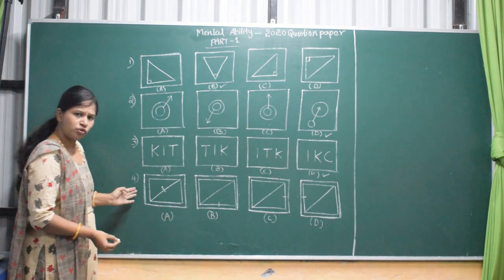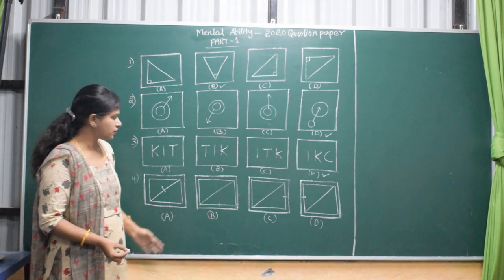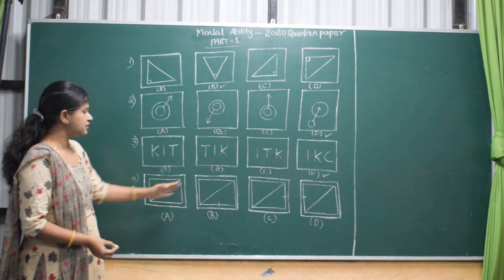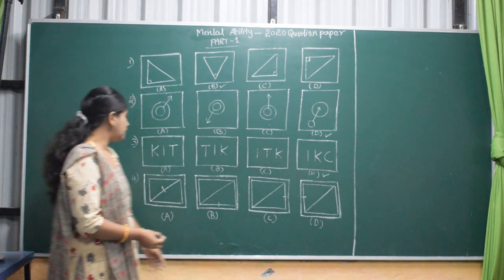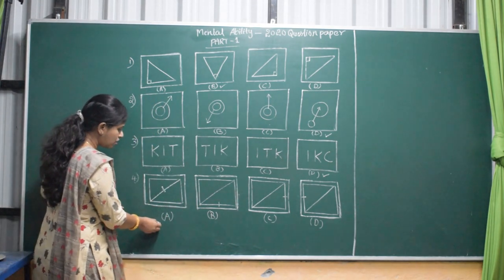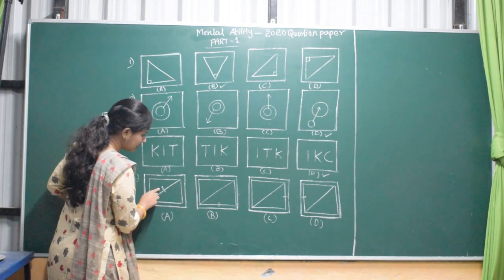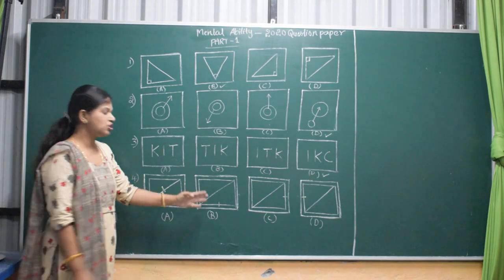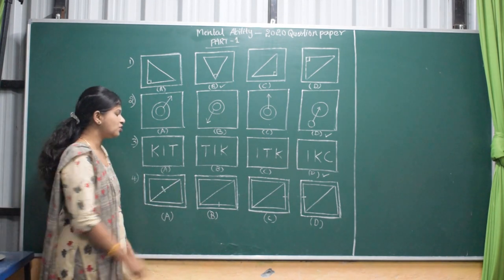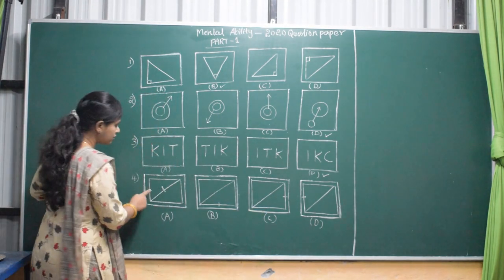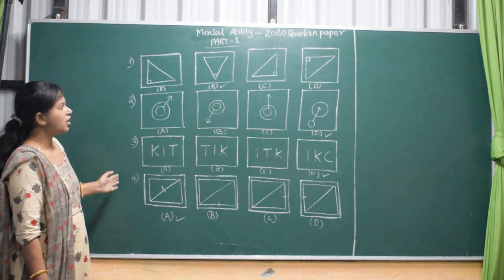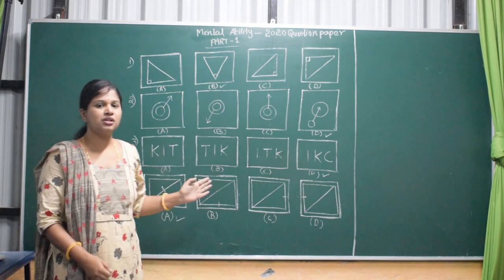Move on to fourth question. Here, 4 boxes are here. One diagonal cuts each box. But in the first figure, a small line cuts in the middle. But in these 3 figures, there is no small line in the middle. So first A is the answer here. Like this way, you have to solve the questions of odd one out.